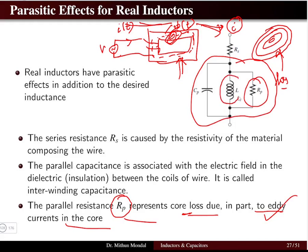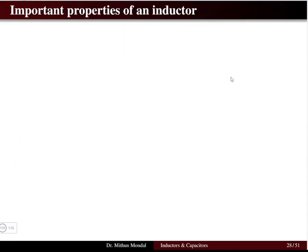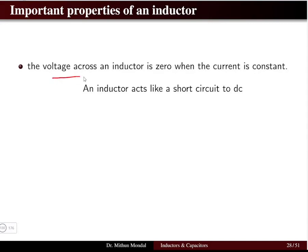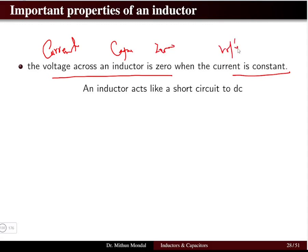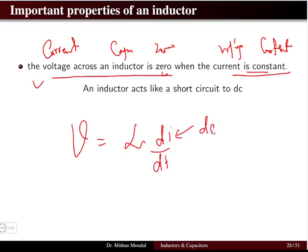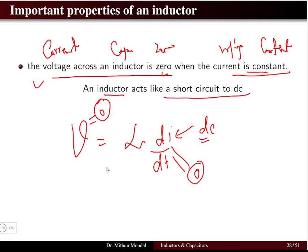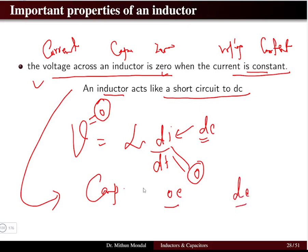These components together form the real inductor, but in day-to-day electric circuit analysis we only use the ideal inductor. An important property: the voltage across an inductor is zero when the current is constant, because v = L di/dt and if current is DC, di/dt = 0, so voltage = 0. This means the inductor acts as a short circuit to DC.